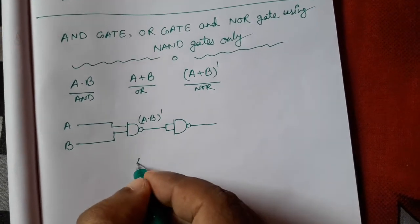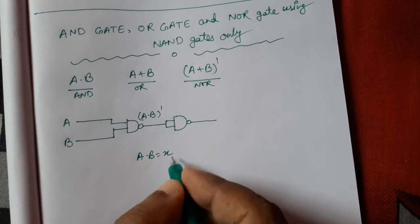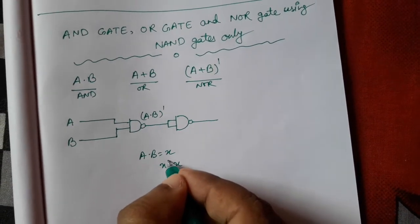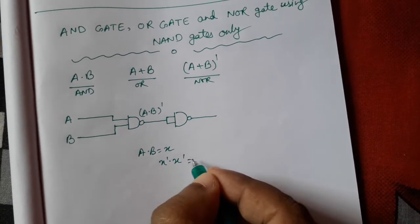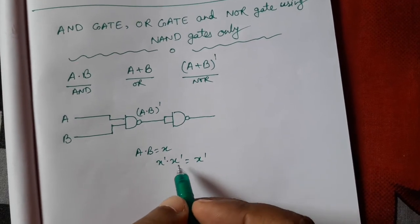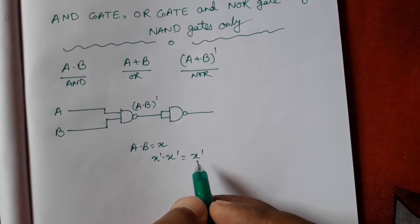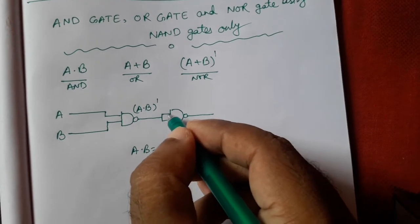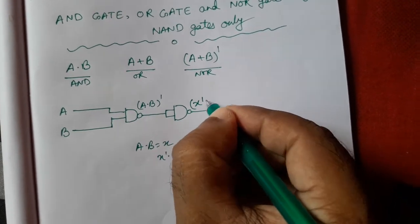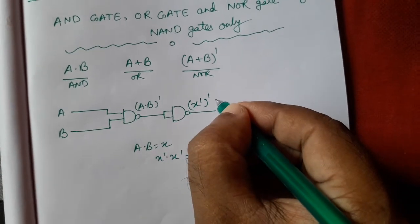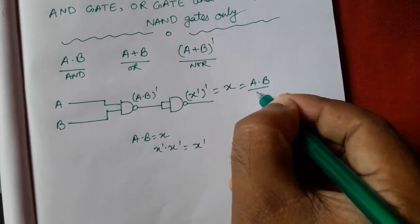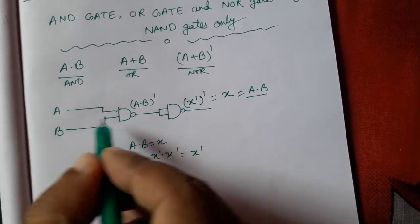So if we consider that A into B equals to X, here we will get X into X. That means X complement into X complement. That is X complement because A into A equals to A. Similarly, X complement X complement equals to X complement. So here what we are getting, two X complement, that is X complement whole complement. That means equals to X, that means A into B. A into B means AND gate. So using this we can get AND gate.